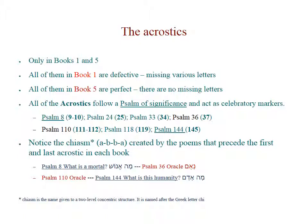There is a chiasm connecting the first and last psalms in this set. Psalm 8 contains the phrase 'what is a mortal' and the word 'fingers' — ma'enosh. Psalm 36 is an oracle — na'um. Psalm 110 is also an oracle — na'um. And Psalm 144 mimics Psalm 8 with 'what is this humanity' — ma'adam — and it includes the only other mention of fingers in the Psalter.